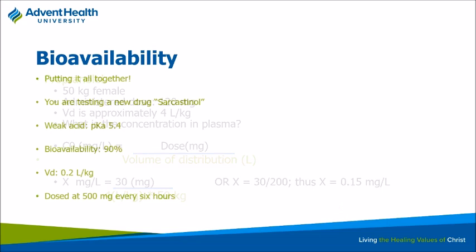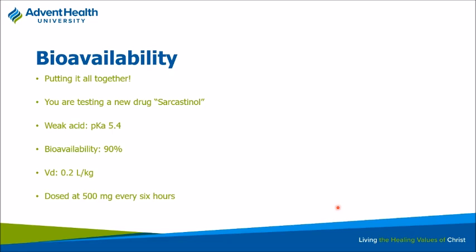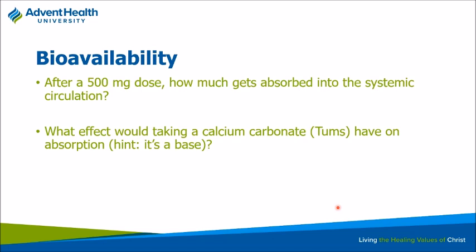Let's say we have a new drug called Sarcastanol, used to treat excessive sarcasm. It's a weak acid with a pKa of 5.4. It has a bioavailability of roughly 90%, meaning 90% of the drug gets through with an oral dose. It has a volume of distribution of 0.2 liters per kilogram. Is that high or low? It's low — less than 1 L/kg. So it tends to be more hydrophilic because it doesn't like to partition out into tissue. We're dosing it at 500 mg every six hours.